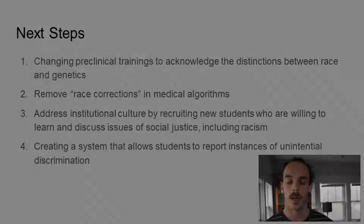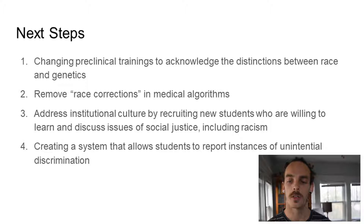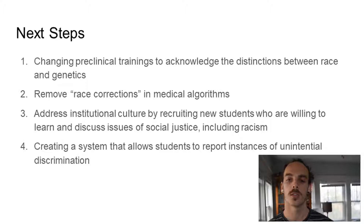Here I have some proposed next steps. First, we should change preclinical trainings to acknowledge the distinctions between race and genetics. Second, we need to remove race corrections in medical algorithms. Third, we need to address institutional culture by recruiting new students who are willing to learn and discuss issues of social justice, including racism. Fourth, create a system that allows students to report instances of unintentional discrimination and work through them with the people that committed those acts.